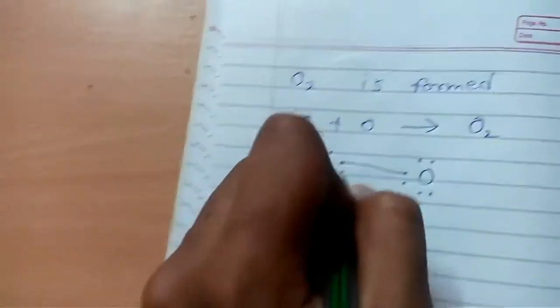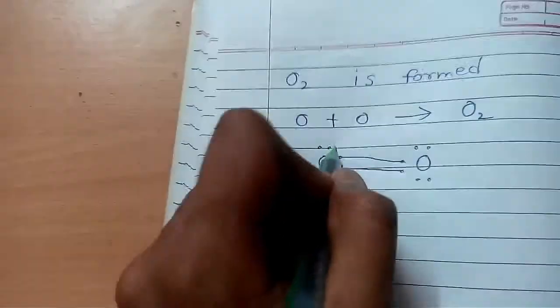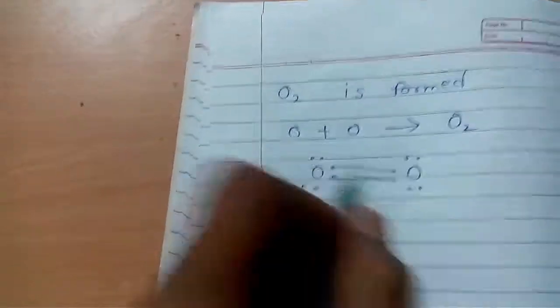So, this and this electrons are being shared. So, 1, 2, 3, 4, 5, 6, 7, 8.